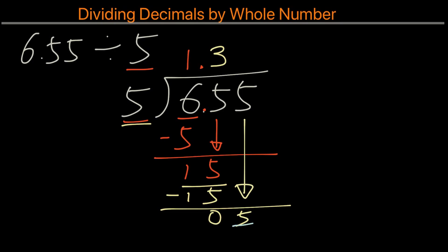So now we have 5 divided by 5, and that will be 1. And the remainder is 0, so this will be our final answer.